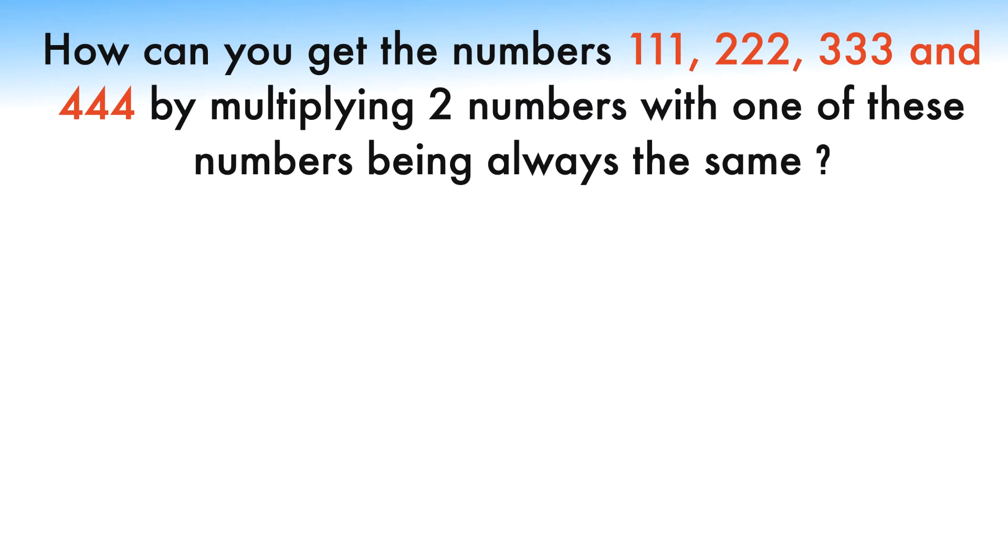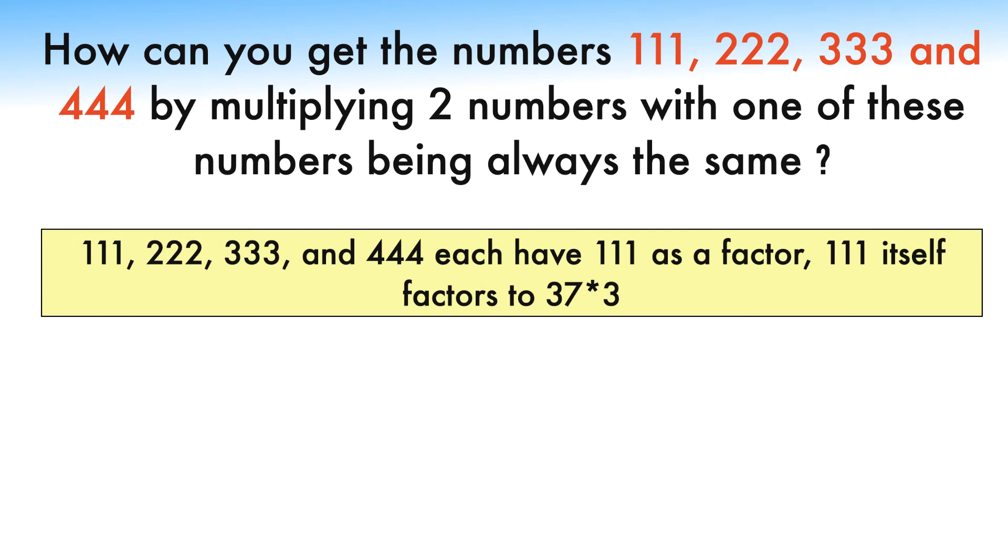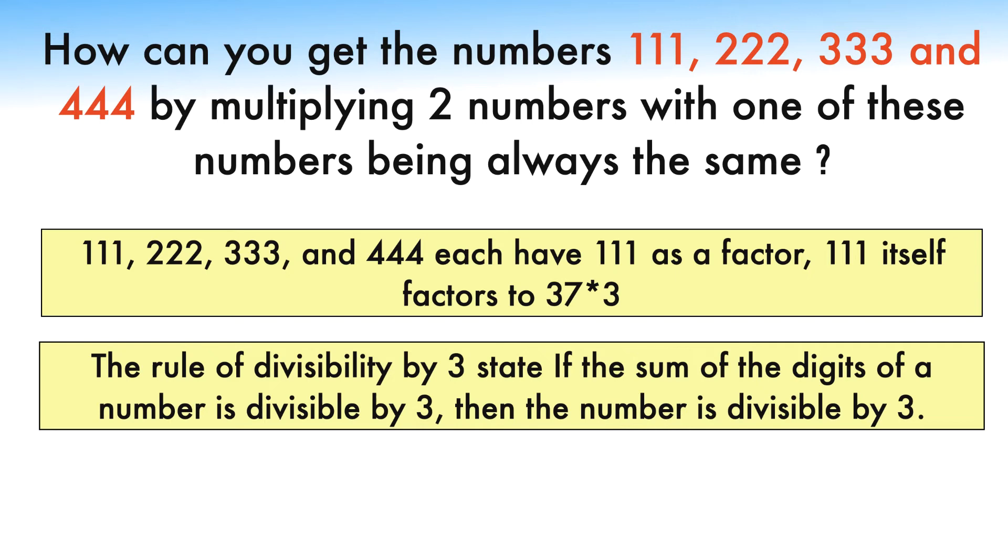So, 111, 222, 333, and 444 each have 111 as a factor. 111 itself factors to 37 times 3. We knew it was divisible by 3 because its digits sum to 3. The rule of divisibility by 3 states: if the sum of the digits of a number is divisible by 3, then the number is divisible by 3.